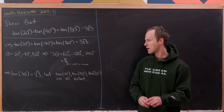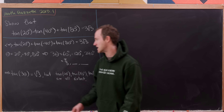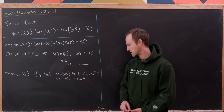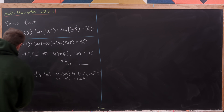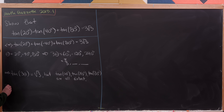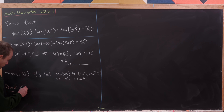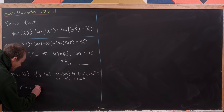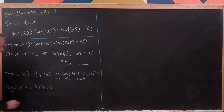All of this motivates us to look for a triple angle formula for tangent. To do that, we're going to use Euler's formula for the complex exponential. Recall that e to the i theta is equal to the cosine of theta plus i times the sine of theta.